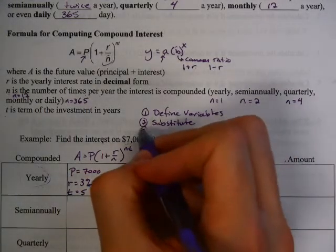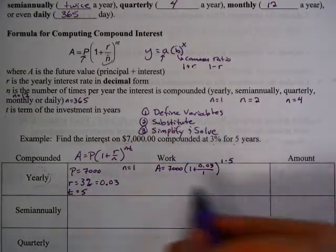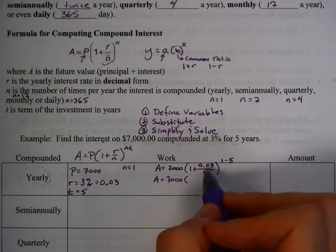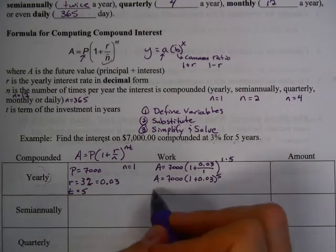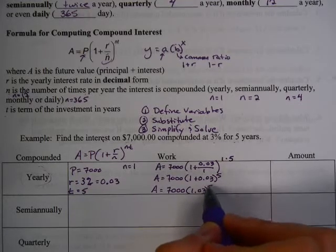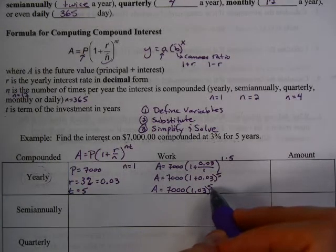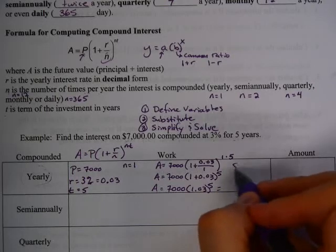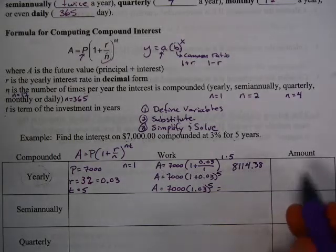Then you're going to want to simplify and solve. Simplifying this isn't so bad. 7,000 stays where it's at. 1 plus 0.03 divided by 1. 1 times 5 is 5. And you end up with something like this. Now, when you plug this in the calculator, don't forget to put your carat sign so that that becomes an exponent. So when you plug this in the calculator, you're going to get a value of 8,114.38, I believe.